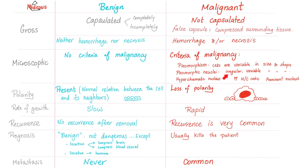Benign tumors are here; malignant tumors — these are the cancers — are here. Cancers are not encapsulated; they might have a false capsule, but that's not a true capsule — not a biological membrane that belongs to the cancer. Cancers can have hemorrhage and necrosis. Under the microscope, cancers have criteria of malignancy: cells are variable, irregular in size and shape; the nucleus is weird and pleomorphic, irregular, variable; hyperchromatic nucleus — the nucleus is dark; increased nucleus-to-cytoplasmic ratio; and the nucleolus is big and also dark.